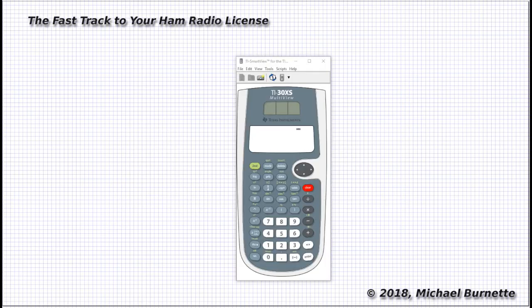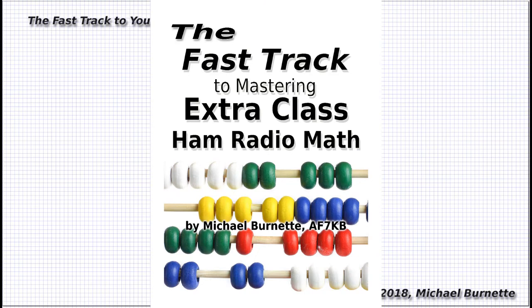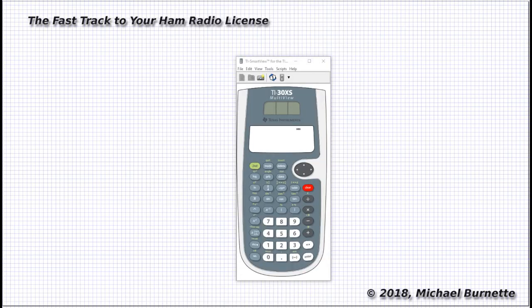I've recommended the Texas Instruments TI-30XS in all the Fast-Track Ham Radio license books, and especially for the math workbook, which gives you the precise buttons to push on the 30XS to solve each problem that can possibly be on the exam. Obviously, the XS is a calculator, and I'm sure you've worked one many times before.